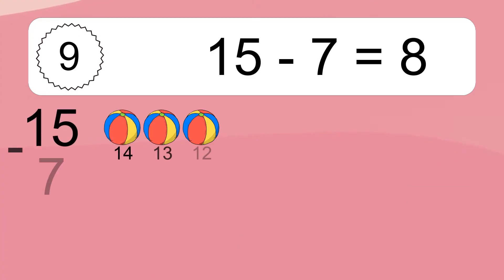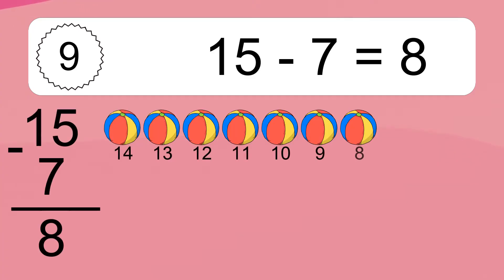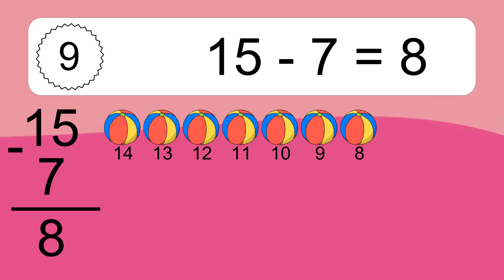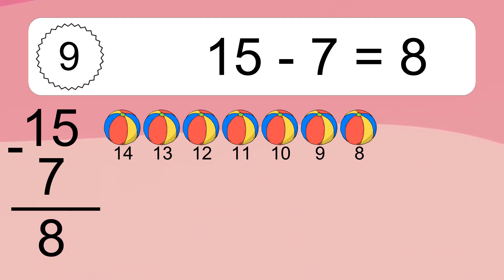15 minus 7 equals what? 15 minus 7 equals 8. Let's count it. 14, 13, 12, 11, 10, 9, 8.